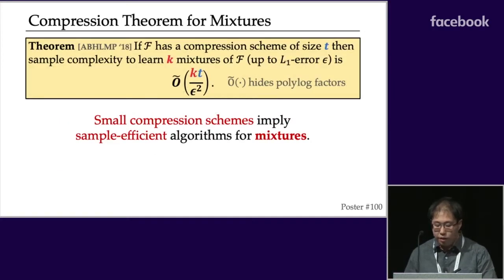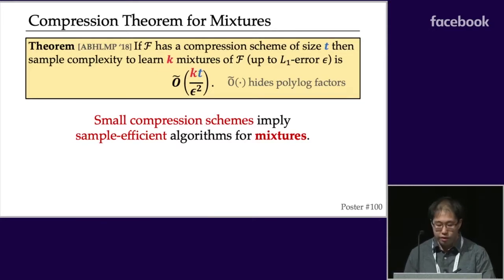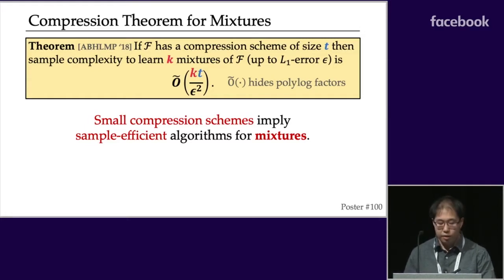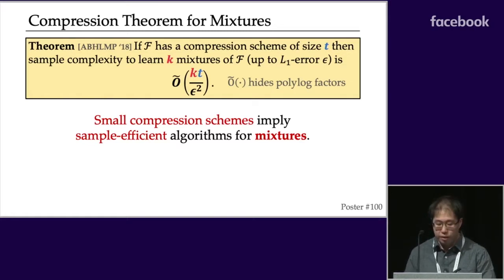Now that we know compression extends to mixtures, and that being compressible implies learnability, one of the main theorems in this paper is: if you have a compression scheme of size T for some class F, there is a black box that outputs an algorithm learning K-mixtures of F using only KT / ε² samples.